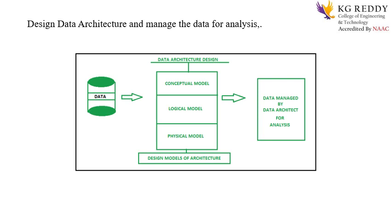Next, coming to the data architecture enterprise: the other pillars are application architecture, business architecture, and integrated architecture. These three are the pillars for data architecture. In the conceptual aspect, it represents all the business entities and their related attributes. In the logical model it represents the entire logic of the relationship. In the physical level it is the actual data mechanism for particular types of functionalities.